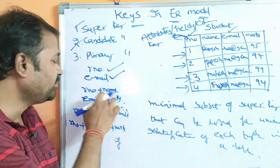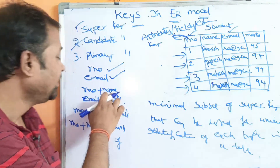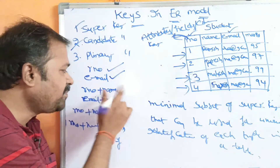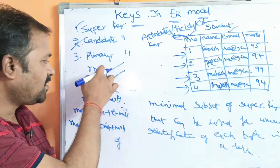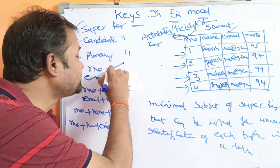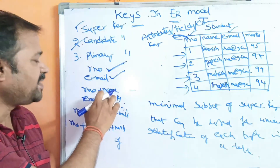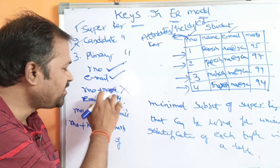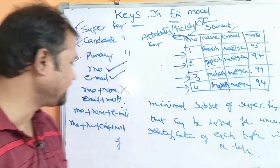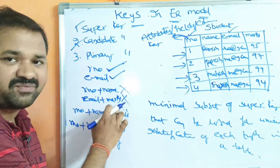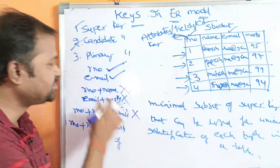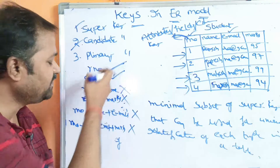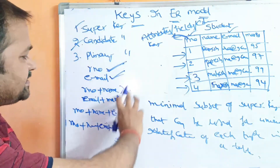Roll number plus name — is it a candidate key? It is not a candidate key because it has two attributes, whereas we already have roll number alone as a candidate key with just one attribute. Similarly, roll number plus name plus email is not a candidate key since it has three attributes, and roll number plus name plus email plus marks is not a candidate key since it has four attributes. The first two — roll number and email — are candidate keys, whereas the combinations are not.